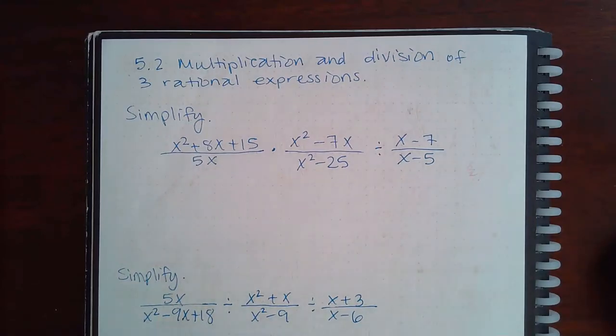Here we have 5.2 multiplication and division of three rational expressions. The key thing to remember is that you need to flip any fractions that follow a division symbol, you need to factor every numerator and denominator where possible, and then you simplify by reducing the common numerators with common denominators.